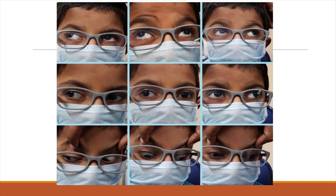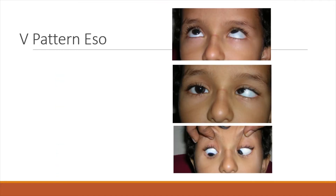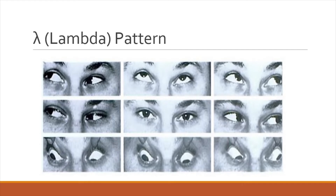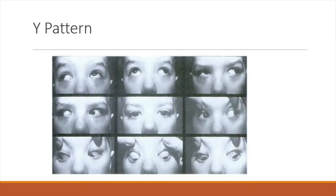This is how a V-pattern exo looks. This is another child who has a V-pattern exo — the exo in upgaze is really markedly increased. Here is an A-pattern exo, wherein it's the opposite: in downgaze the exo is really a lot, while in upgaze the eyes are comparatively better. The X-pattern has large exo deviations both in upgaze and downgaze. Lambda patterns have the same deviation in primary and upgaze, increasing in downgaze. Y patterns are the opposite of lambda — deviation in primary and downgaze remains the same, increasing in upgaze.